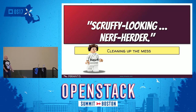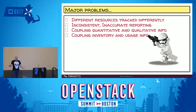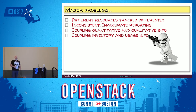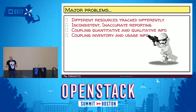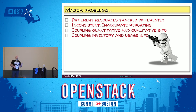So what is the mess we're currently trying to fix with the placement service? There are four major problems we are slowly trying to address, and it all comes down to technical debt that has accumulated inside of Nova over the last seven or so years. Each type of resource in the system tends to be tracked and managed and represented differently, and that means a whole lot of spaghetti code gets introduced into the system.